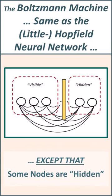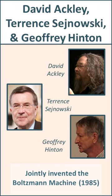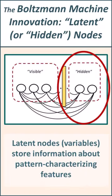The Boltzmann machine is essentially the same as the Hopfield neural network, with one big difference. So if you understand the Hopfield neural network, you'll also understand the Boltzmann machine. The Boltzmann machine was invented in 1985. The innovative breakthrough was the introduction of latent variables, or hidden nodes.